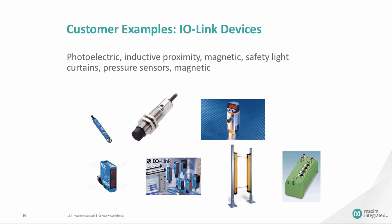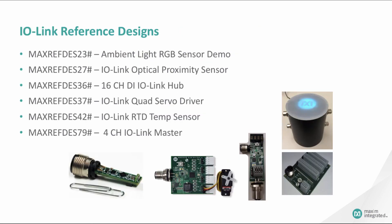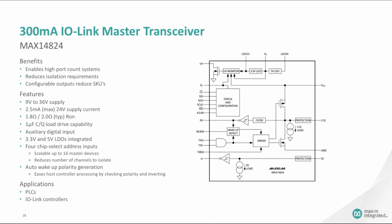Industrial sensors, like many technologies today, are trying to pack a bigger punch in a smaller package. Examples include a photoelectric sensor, inductive proximity sensor, magnetic sensor, safety light curtain, and pressure sensor. Maxim has six IO-Link reference designs, including an ambient light sensor, optical proximity sensor, digital input hub, servo driver, RTD temperature sensor, and an IO-Link master. One example is the MAX14824, a 300 milliamp IO-Link master transceiver.